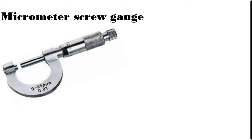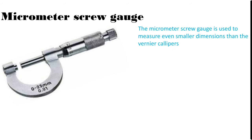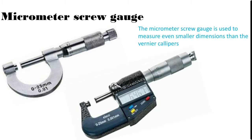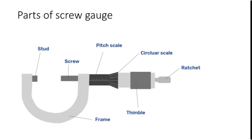Next is micrometer screw gauge. These are some of the screw gauges. The micrometer screw gauge is used to measure even smaller dimensions than the vernier caliper. What are the parts of screw gauge? As you can see here: pitch scale, circular scale, ratchet, screw, stud, frame, and thimble. These are the important parts of screw gauge. Here also we take pitch scale reading and circular scale reading to calculate the value in our measurement.